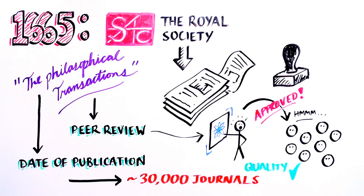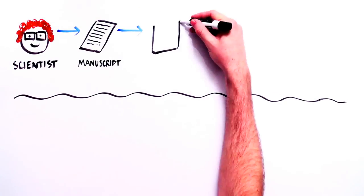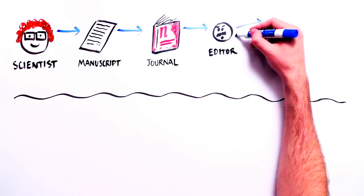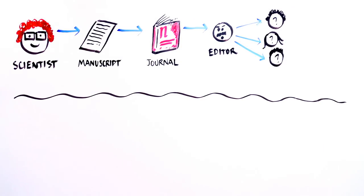Let's see how the process works. First, scientists write a manuscript and send it to a journal for consideration. If the editors are interested, it is sent out to a group of anonymous scientists for their opinion of the quality of the work.